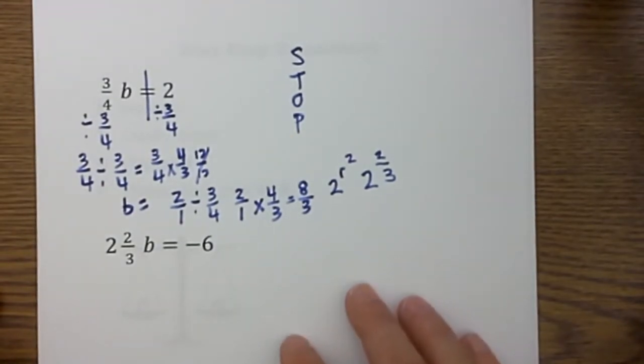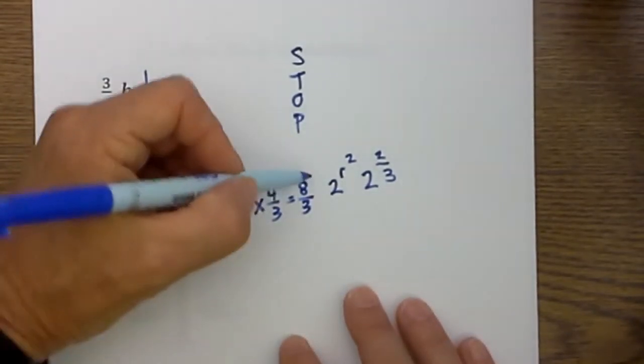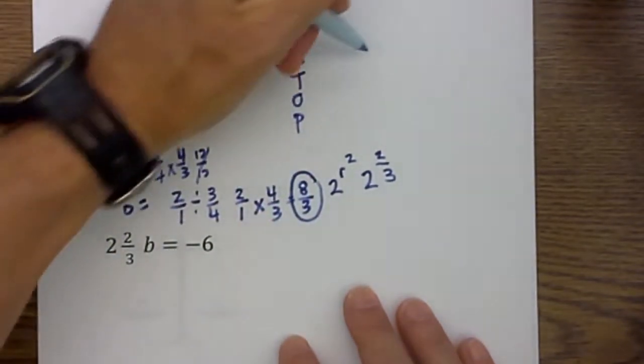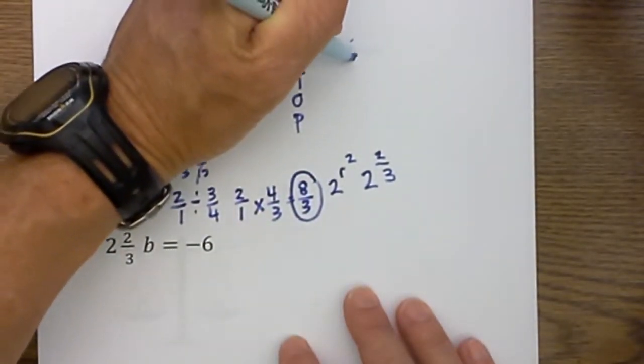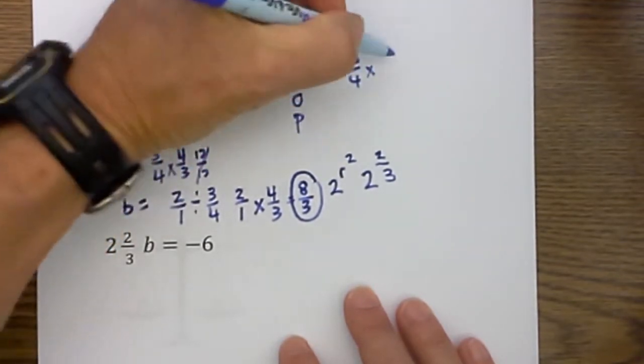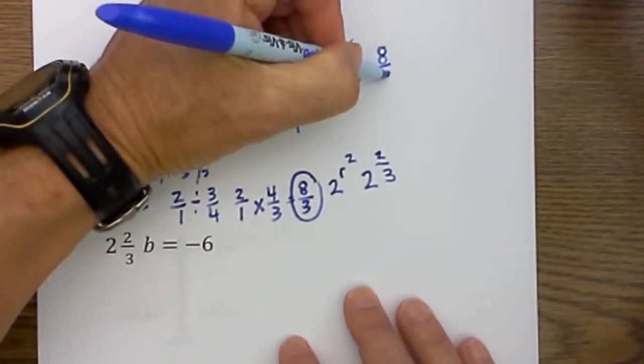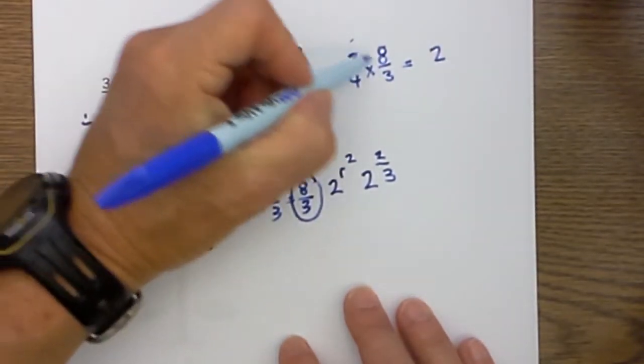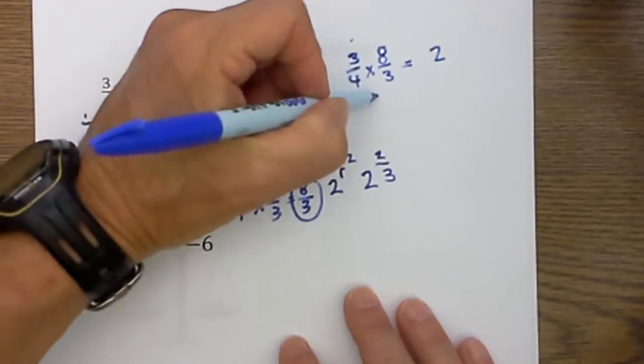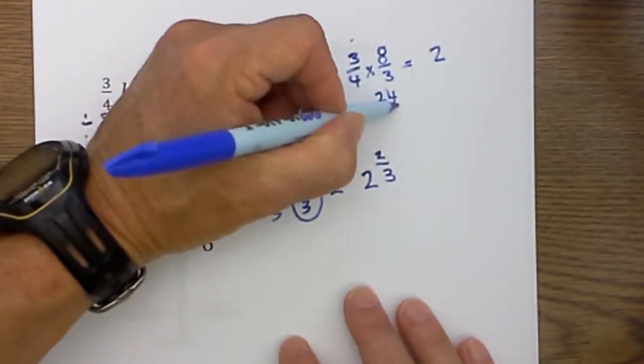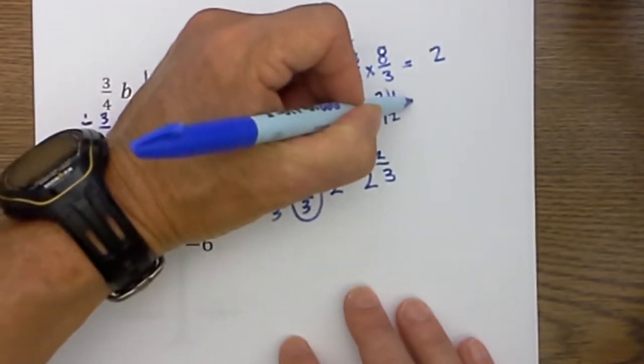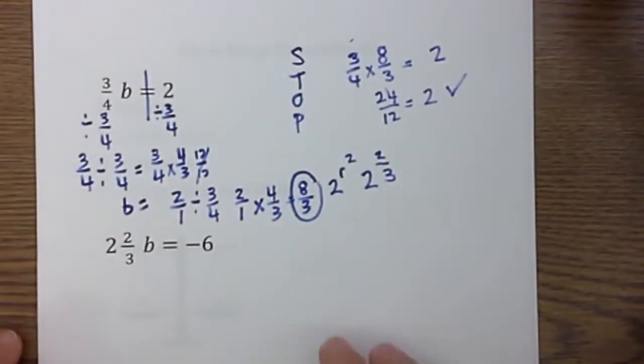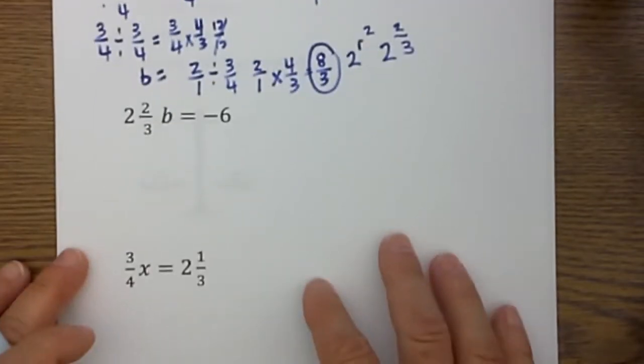Now I need to check my work. So I am going to go ahead and plug in 8/3 and let's check our work. So I have 3/4 times 8/3 and that needs to equal 2. So let's see if I did my work properly, 8 times 3 is 24 and 4 times 3 is 12, 24 divided by 12 is 2. So check, we did that properly. Let's move on to the next one.